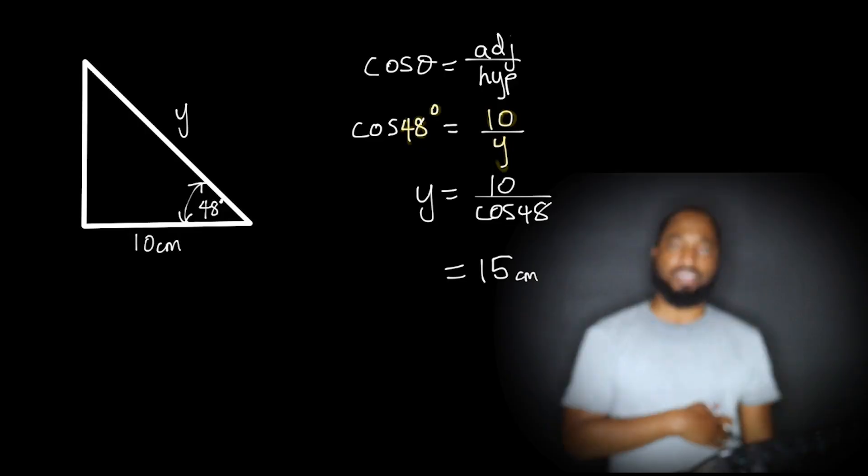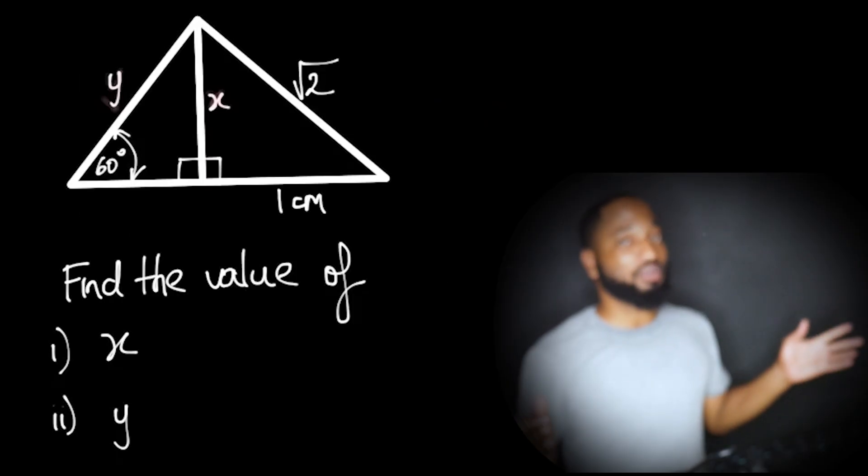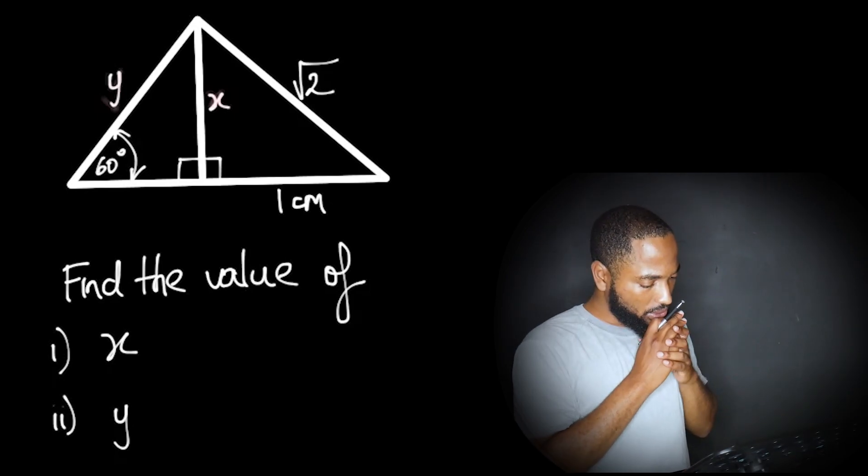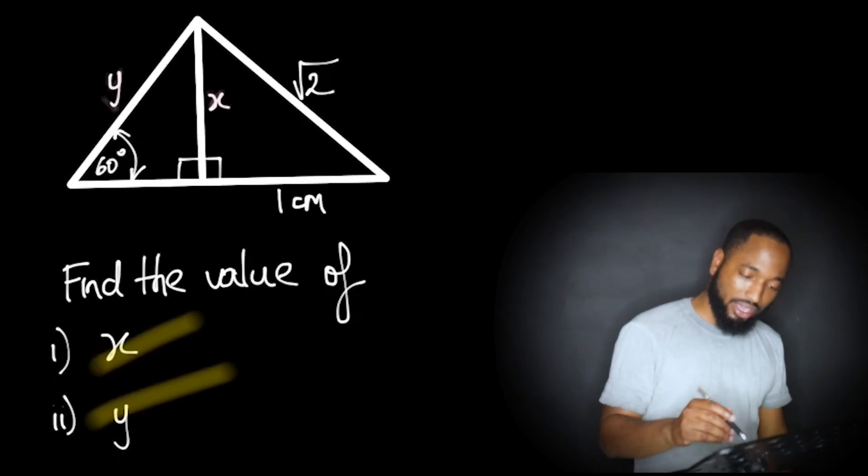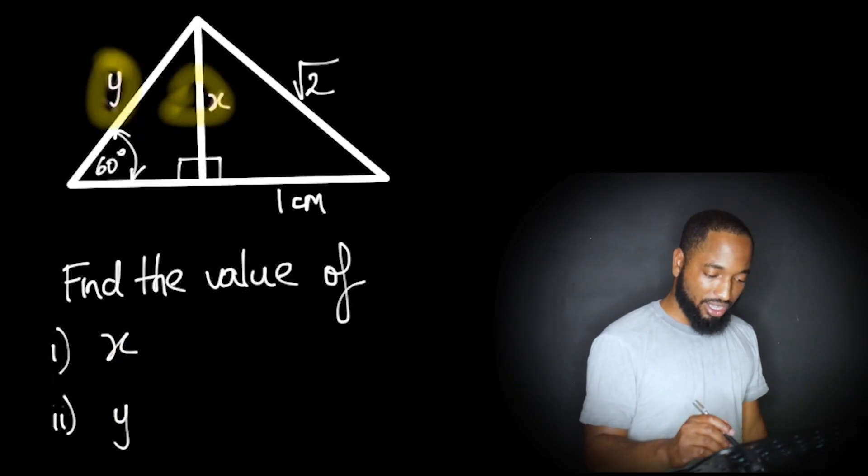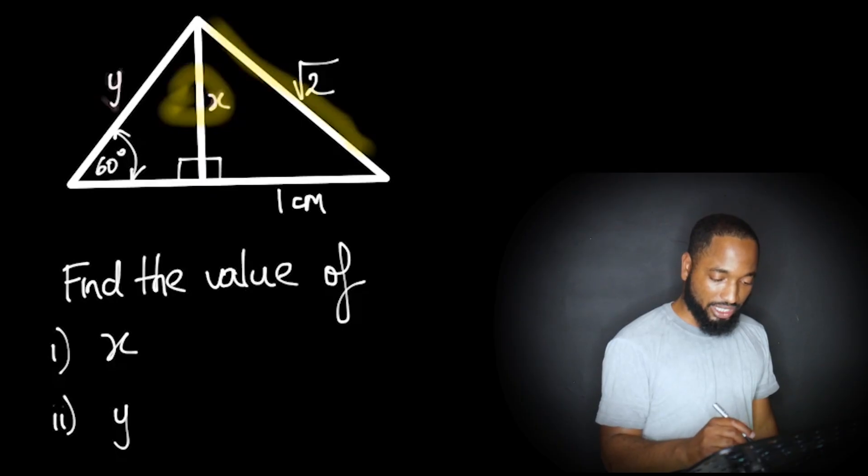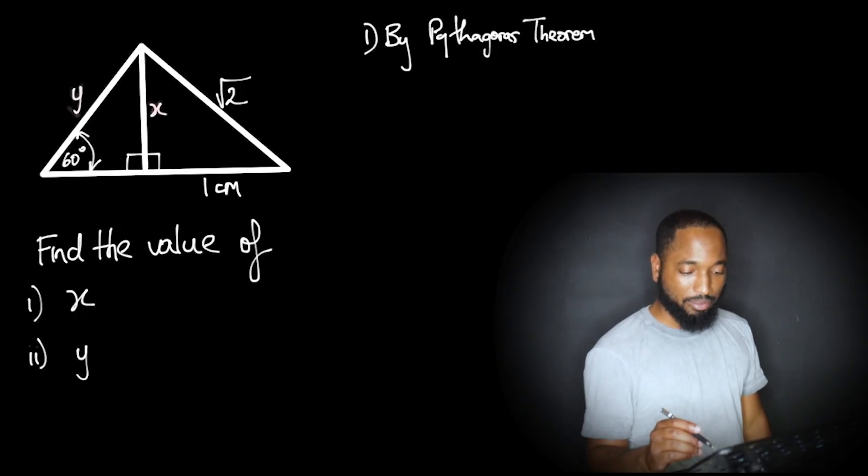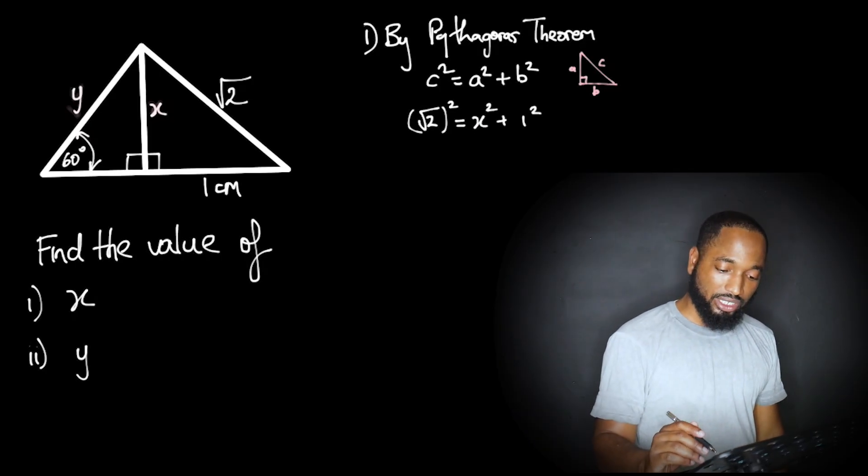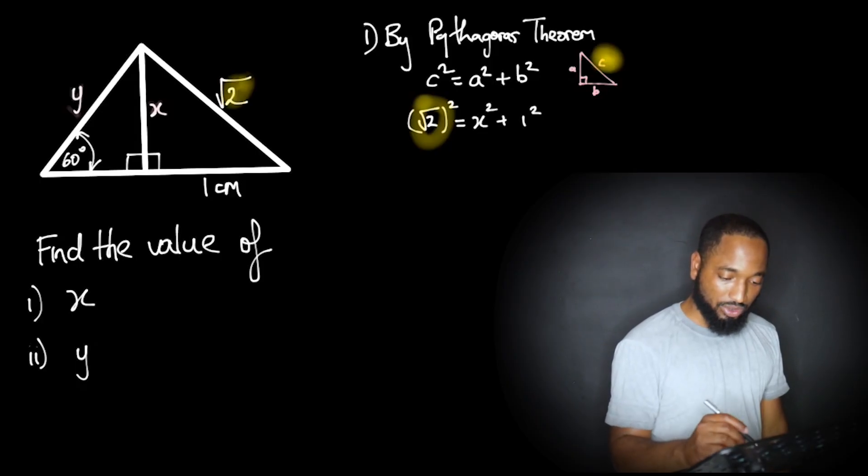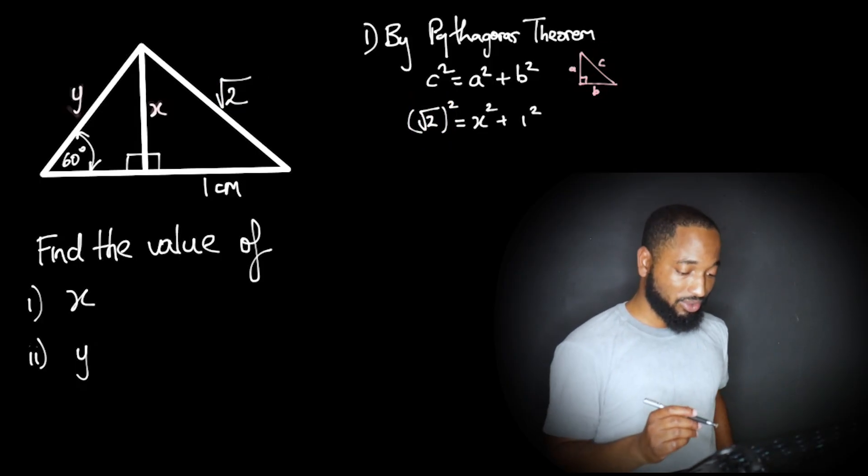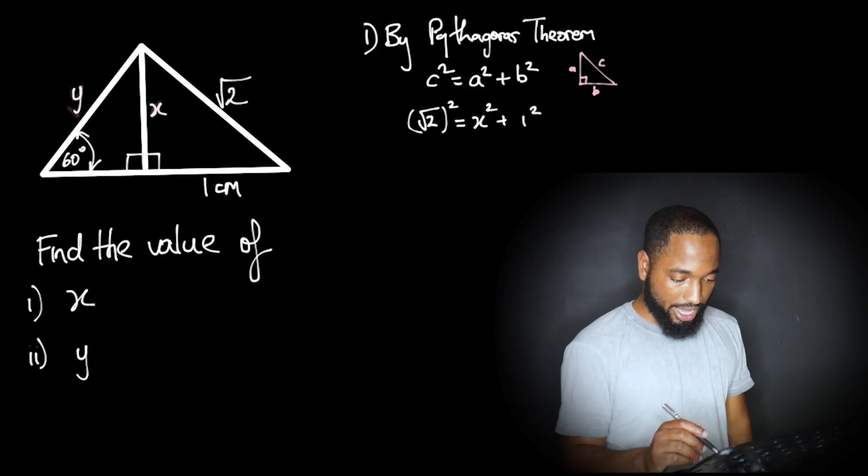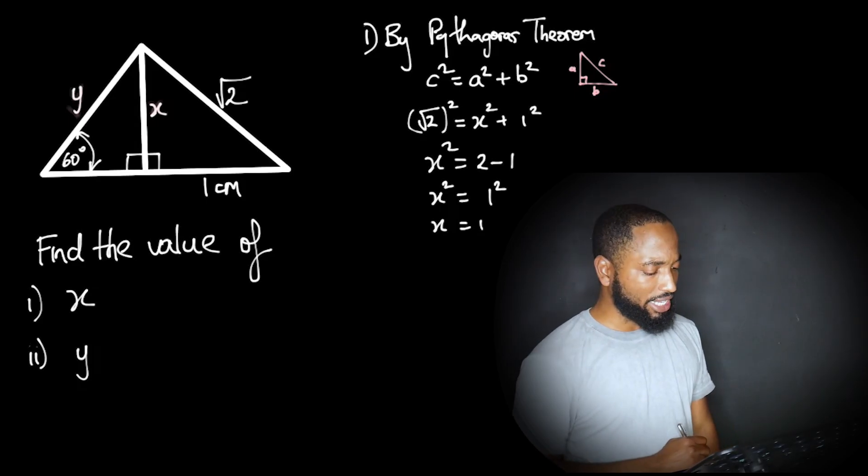Normally you approximate to three significant figures or one decimal place when you're doing trigonometry. This next question is a bit more challenging. We're going to combine some stuff we learned in the last video on Pythagorean theorem. You can check that out. So we need to find X, then we need to find Y. X looks like a Pythagorean theorem question because there's a hypotenuse and the other two sides there. So we just hit them with a little Pythagoras there. By Pythagorean theorem, C squared equals A squared plus B squared. Substitute. Then you go ahead and you get X equals 1 as well.